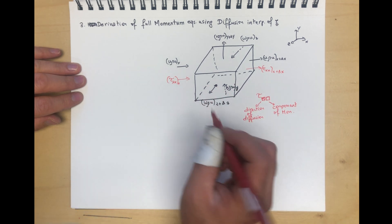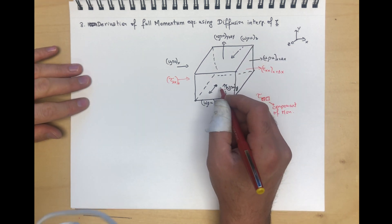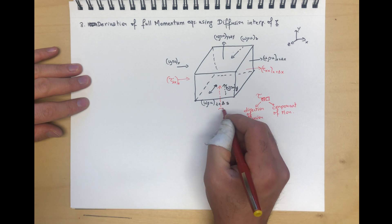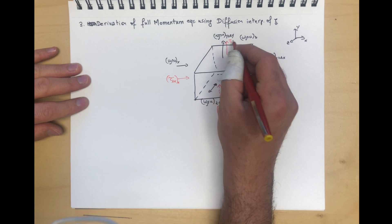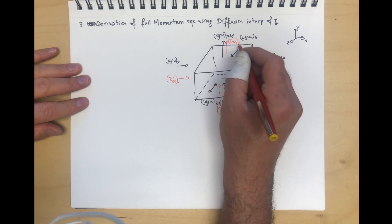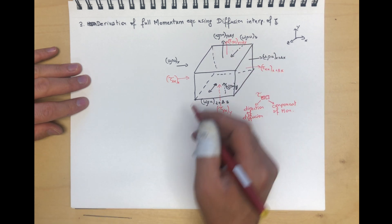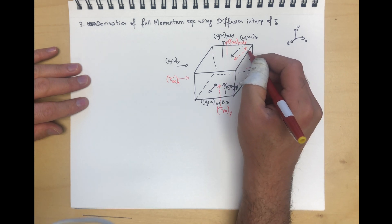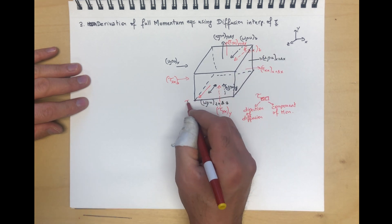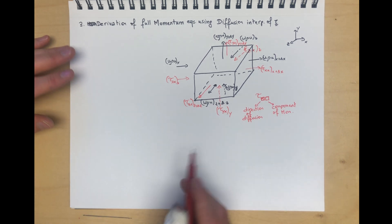For diffusion of x momentum in the x direction, we have τ_xx. In the y direction, we have τ_yx at y and τ_yx at y plus Δy. In the z direction, we have τ_zx at z and τ_zx at z plus Δz.